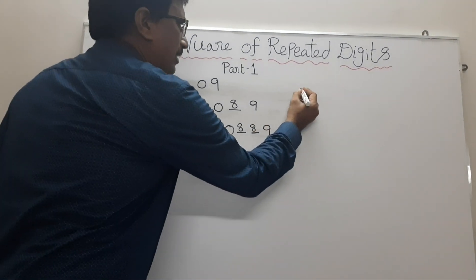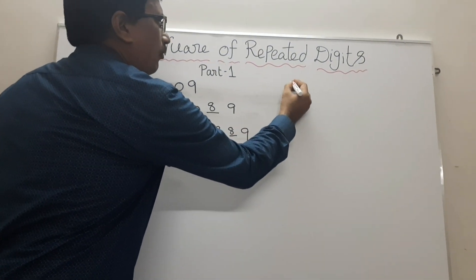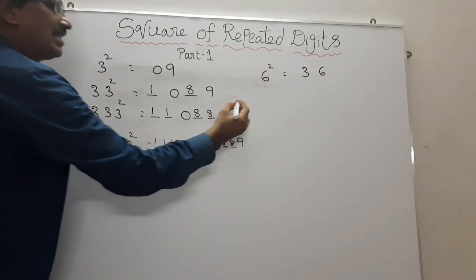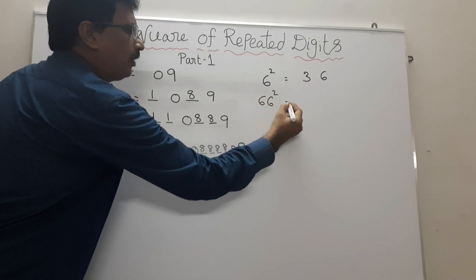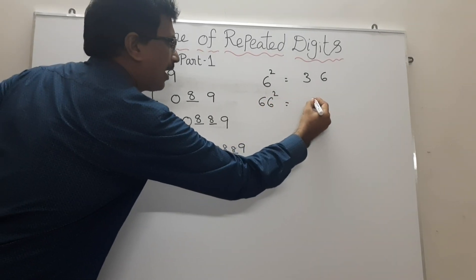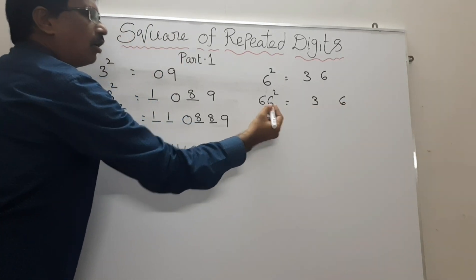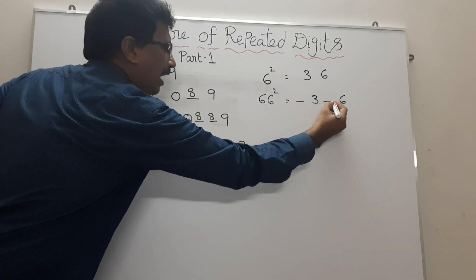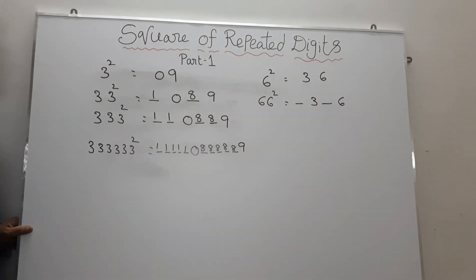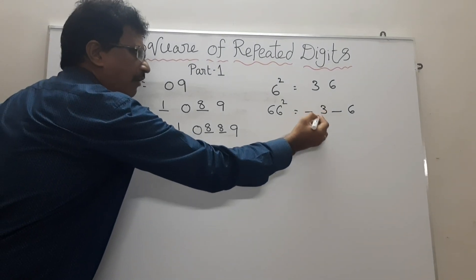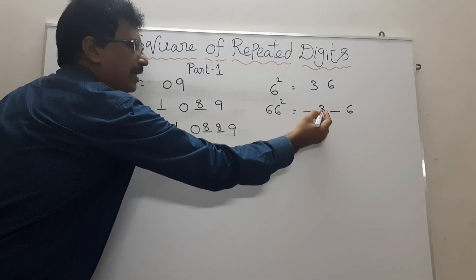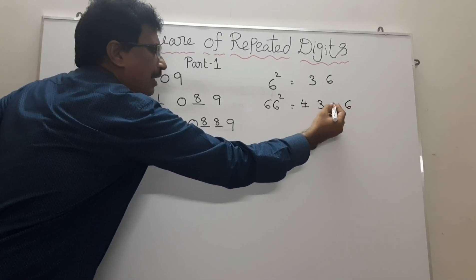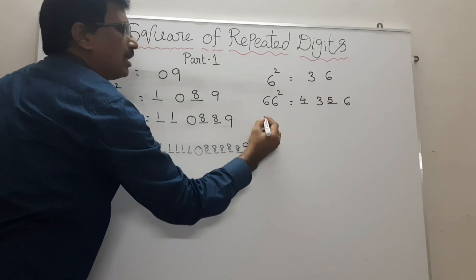Now we will discuss the repeated digits of 6. We know that 6 squared is 36. In the same manner, 66 squared — this is a 2-digit number. 6 squared is 36. There are 2 digits, so we have to insert 1 blank before 3 and 1 blank after 3. Now we want to add 1 for 3: 3 plus 1 is 4. We have to subtract 1 from 6: 6 minus 1 is 5. So 66 squared equals to 4,356.